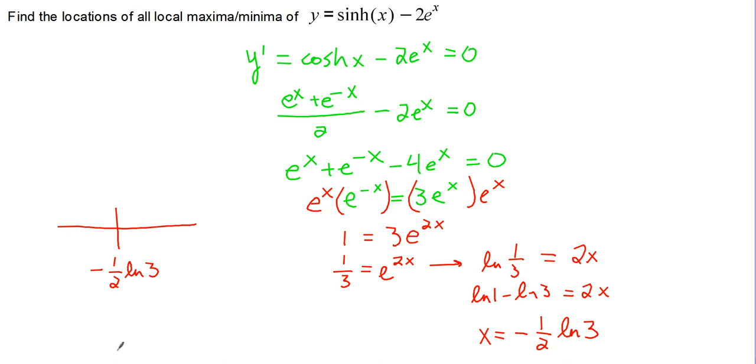So something that is to the right of negative 1 half ln 3 would be 0, because natural log of 3 is a positive number, and if we multiply it by a negative, that gives us a negative. So we'll test 0. We can test it in any form of our derivative. I think that maybe this one right here is an easier one to look at.